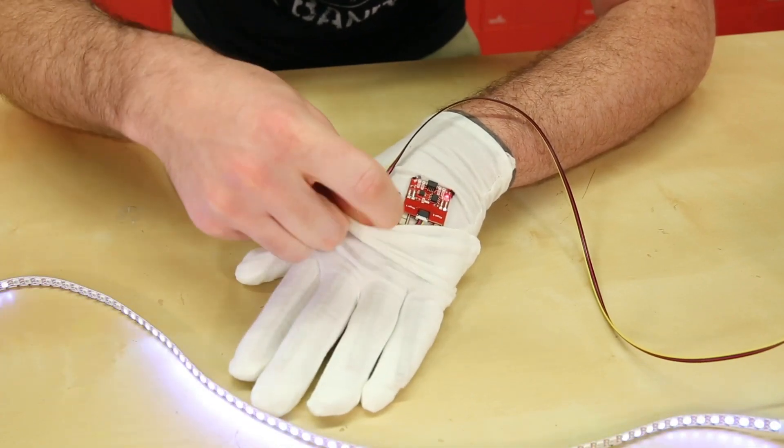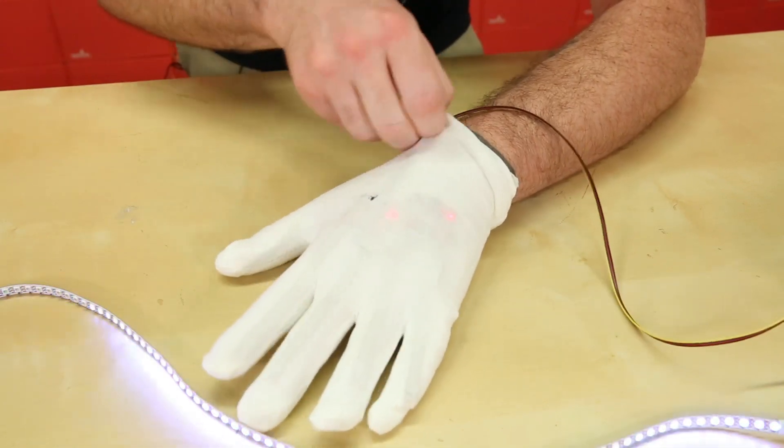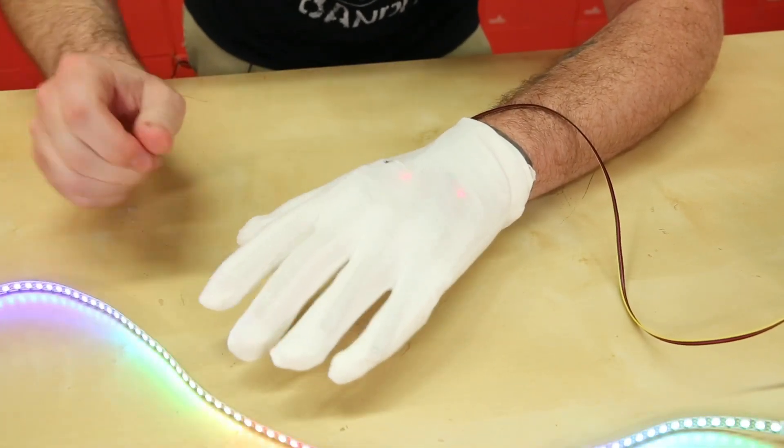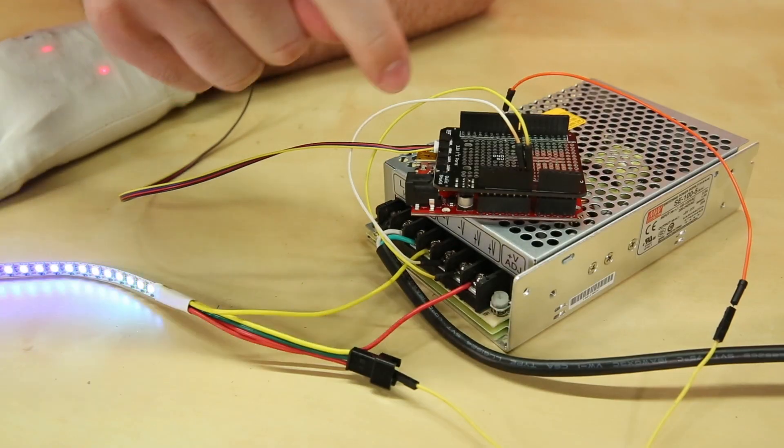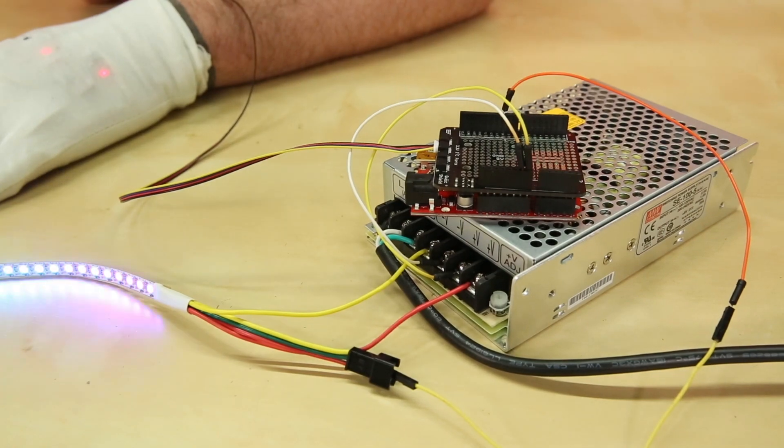We went ahead and sewed in two controller boards onto a glove and then put another glove on top of that to make sure that the flex sensors stay with the fingers. It all runs into a quick shield attached to a red board that is all powered by a meanwell power supply.